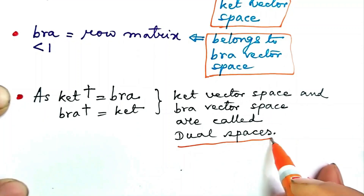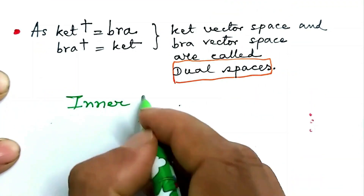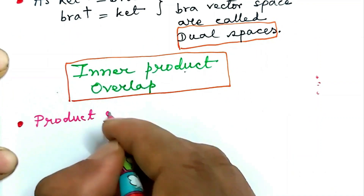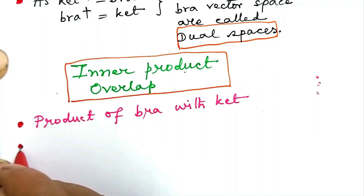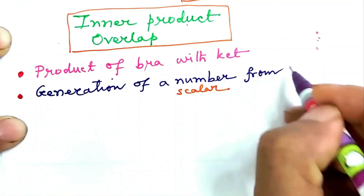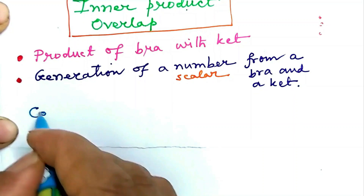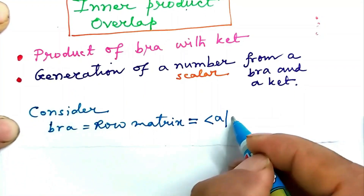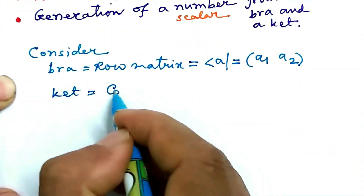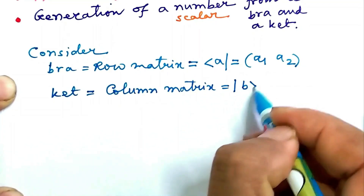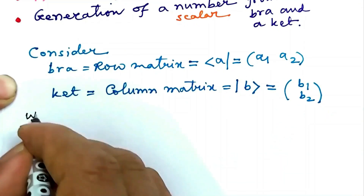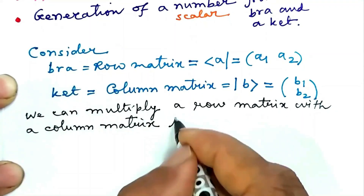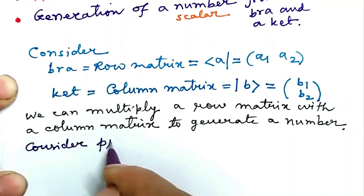They are Hermitian conjugates of each other. We next discuss inner product, also called overlap. We shall explore the product of bra with a ket and try to generate a number or scalar. Consider bra A, which is a row matrix — say bra A equals row (a1, a2) — and a ket which is a column matrix — say ket B equals column (b1, b2). We know that we can multiply a row matrix with a column matrix to generate a number.